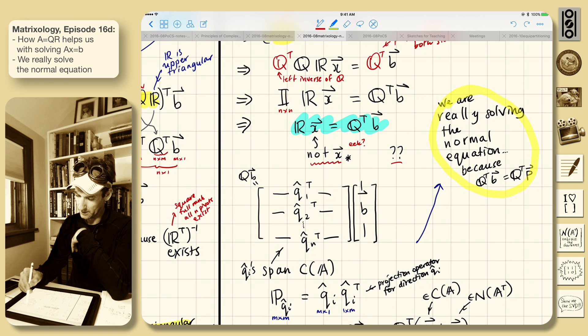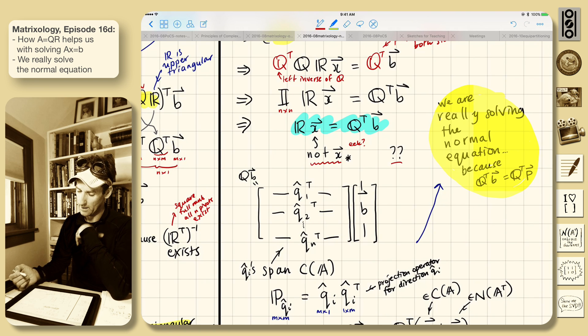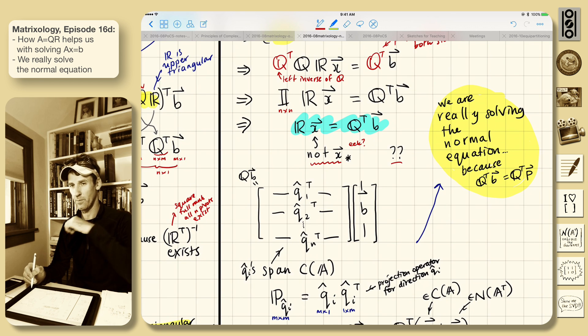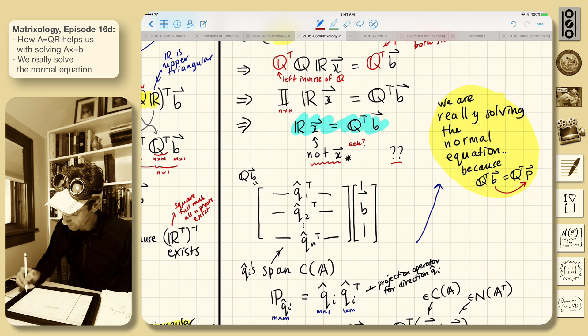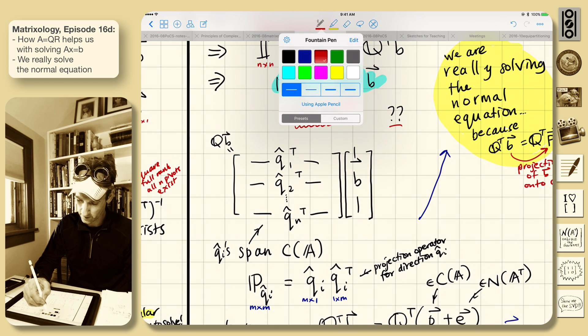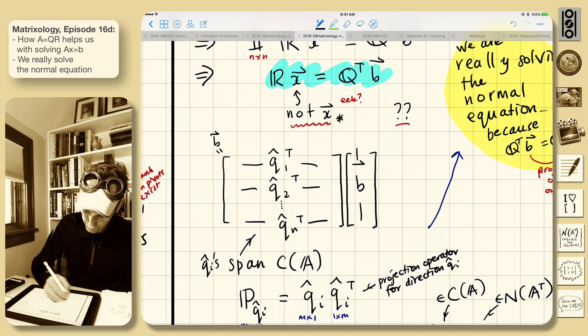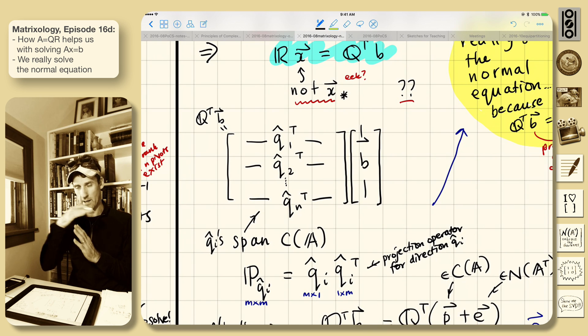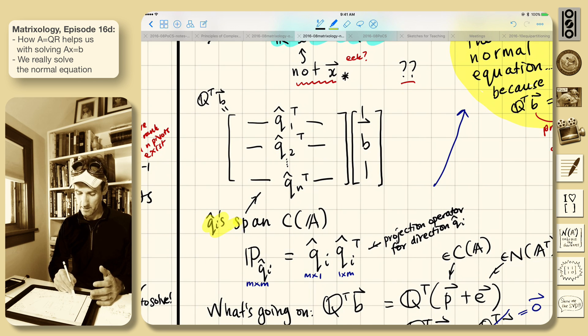And it turns out we are really solving the normal equation. Because Q transpose B is Q transpose P. B is the projection of B onto the column space of A. So let's look at what's happening on the right hand side. We've got Q transpose B. So the Q's are now sitting there in rows. The Q's span the column space of A.